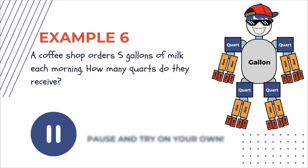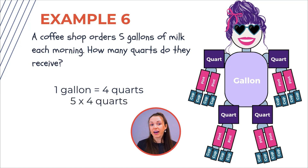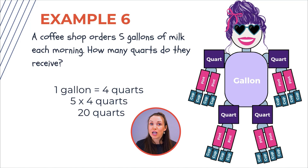Here's another one for you. A coffee shop orders five gallons of milk each morning — how many quarts do they receive? Pause the video and try this on your own. One gallon is four quarts, so five gallons times four quarts gives us 20 quarts.